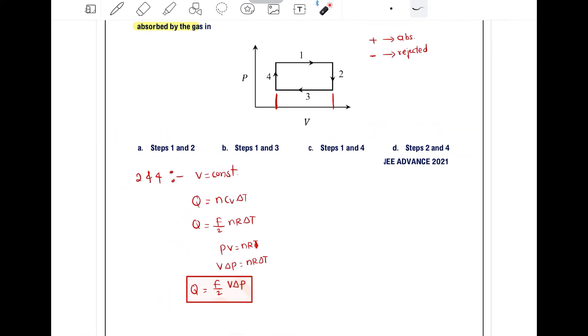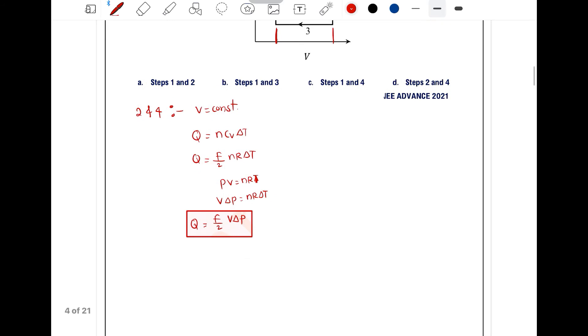In process 2, pressure is decreasing, while in process 4, pressure is increasing. For process 2, ∆P is negative, so Q is also negative. In process 4, ∆P is positive as pressure is increasing, so Q is positive.